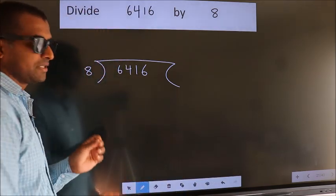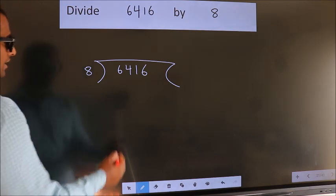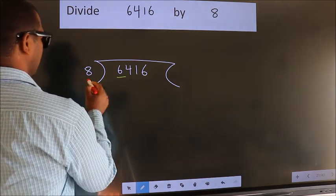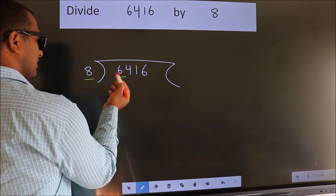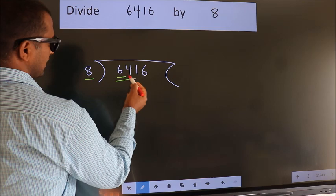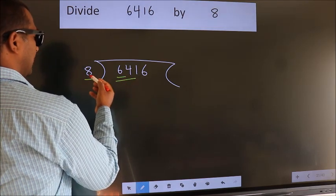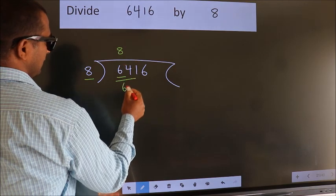This is your step 1. Next, here we have 6, here 8. 6 smaller than 8. So, we should take two numbers 64. When do we get 64? In 8 table. 8 8s, 64.